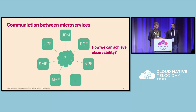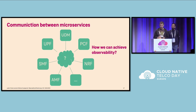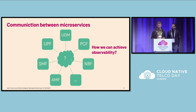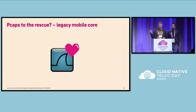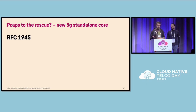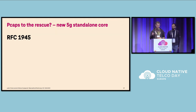Before getting to the special guest, I want to talk a little about our network functions. We of course have a multi-vendor network function system here, and the question is how these functions need to talk to each other and how we can achieve some observability between them. In the good old legacy world, everyone loves the PCAP, right? But if we look at 5G standalone with all these new services, we have RFC 1945 — does anyone know what that is? Raise hands? No one? Maybe you're too young?